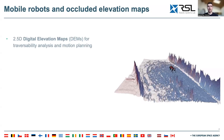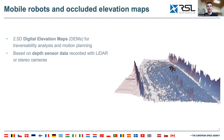Modern mobile robots usually rely on 2.5D digital elevation maps for traversability analysis and motion planning. These elevation maps are generated based on depth sensor data recorded with LiDAR or stereo cameras. To enable safe and optimal path planning, we strive for complete and accurate elevation maps.